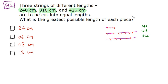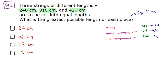If you consider the length of each piece as 10 centimeters, you get 24 pieces from the 240 cm string. But if you cut the 318 cm string into pieces of 10 cm each, you will not get pieces of equal length. The same is the case with the 426 cm string.